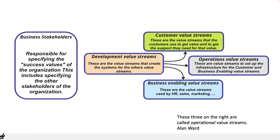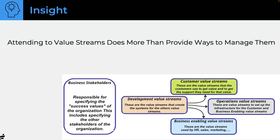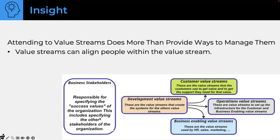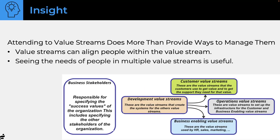Attending to value streams provides more ways to manage them. They can align people — and I've been emphasizing that alignment is cheaper than coordination. Coordination is the cost you pay when you don't have alignment. If you combine teams you have to coordinate them, but if you have a high-level view where stakeholders provide context for everything, you get alignment naturally and people work together. Seeing the needs of people in multiple value streams is also useful because these do intertwine with each other.